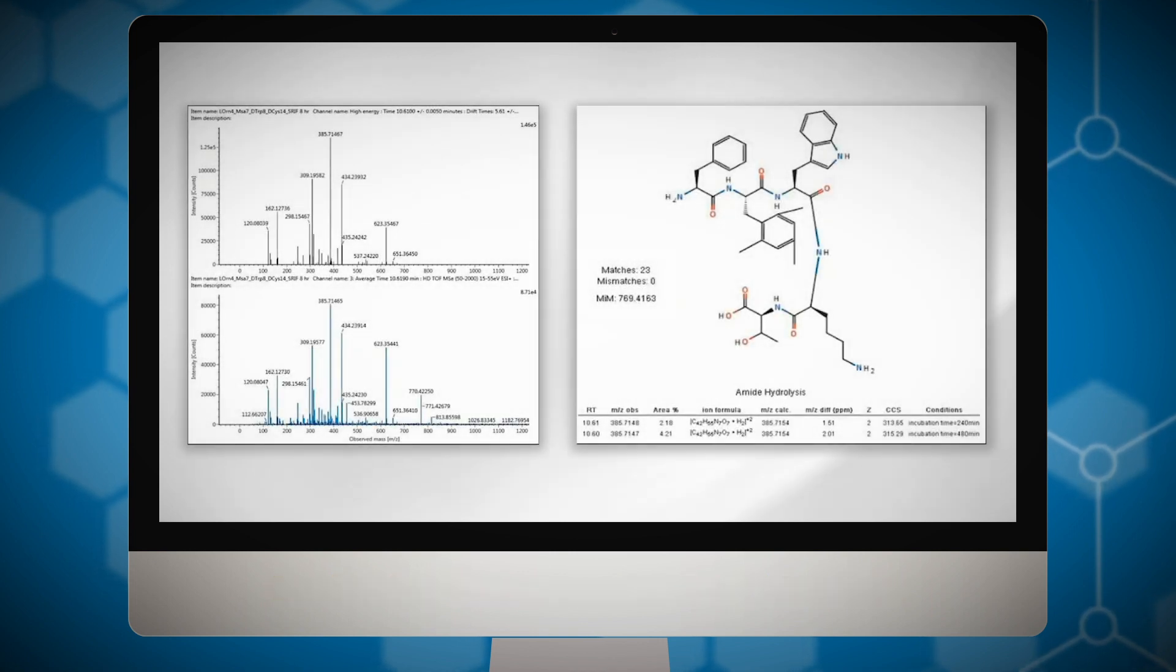A key benefit of ion mobility enabled mass spectrometry is the generation of clean product ion spectra without the need for targeted data acquisition. Product ions are associated with their precursors on the basis of a shared drift time.